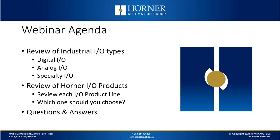Let's take a look at our agenda. We're going to review a variety of general industrial IO type topics, including digital IO, analog IO, and specialty IO. And then we're going to spend some time reviewing each Horner IO product line.